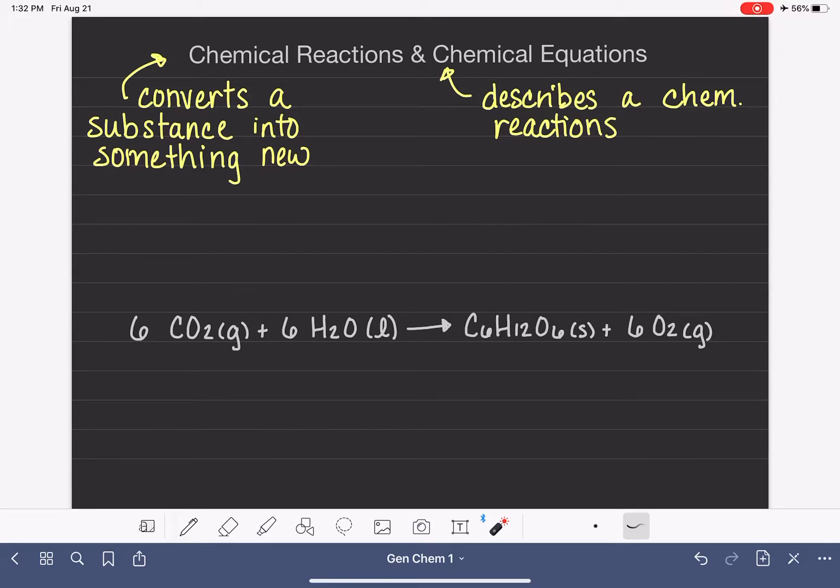In this video, I'm going to introduce you to the basic features of a chemical equation so that when you look at them, you understand what all the different symbols represent. All chemical equations feature an arrow, called the reaction arrow, somewhere in the middle of the equation. The arrow separates our starting material from our final material.